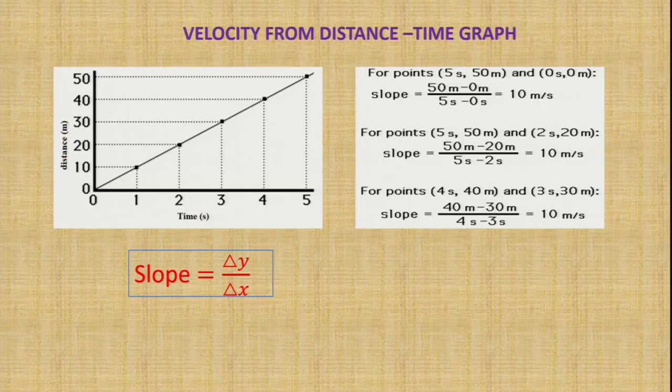At this point, we will see how we can calculate the velocity of an object from the distance-time graph. To do that, you need to find out the slope. The formula of the slope is delta y divided by delta x, where delta y is the change in position and delta x is the change in time.